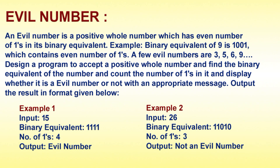An evil number is a positive whole number which has an even number of ones in its binary equivalent. For example, the binary equivalent of nine is 1001, which contains an even number of ones. A few evil numbers are three, five, six, nine, etc. Design a program to accept a positive whole number, find the binary equivalent of the number, and count the number of ones in it.